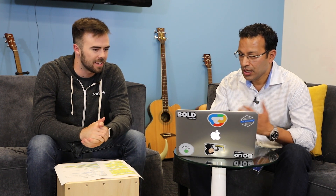There are really four key steps to use our SDK. One: authenticate with DocuSign. Two: access templates and download them for offline usage. Three: your own business process of collecting signatures and sending documents. And four: syncing them back. So really there are four key steps to integrating our SDK within your app.